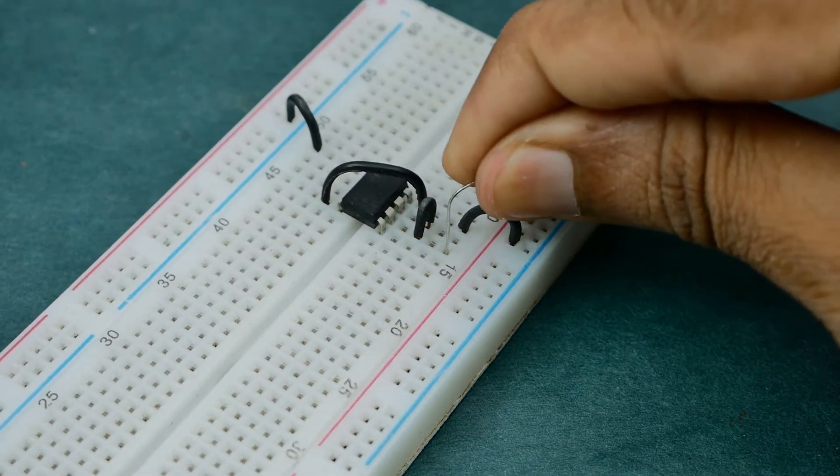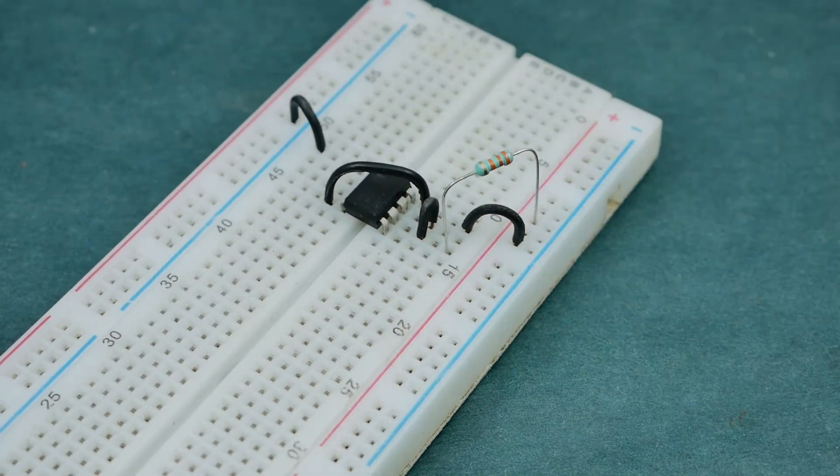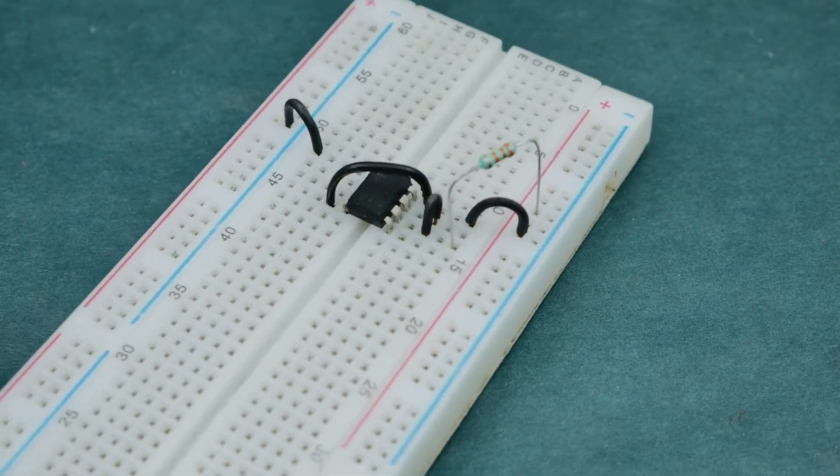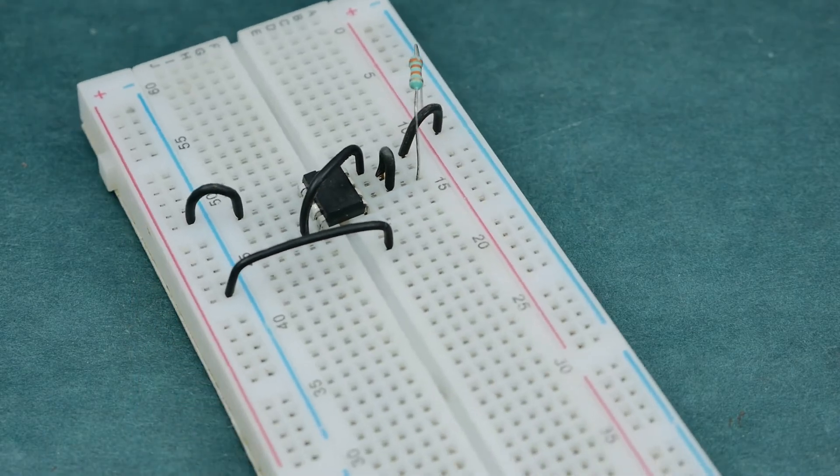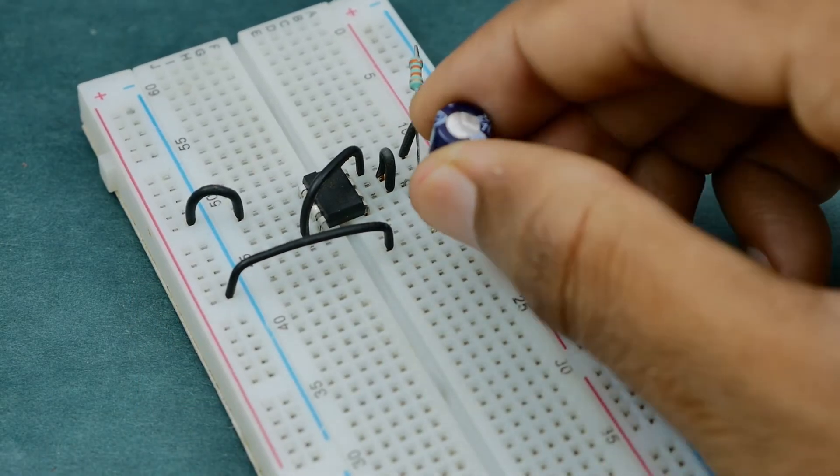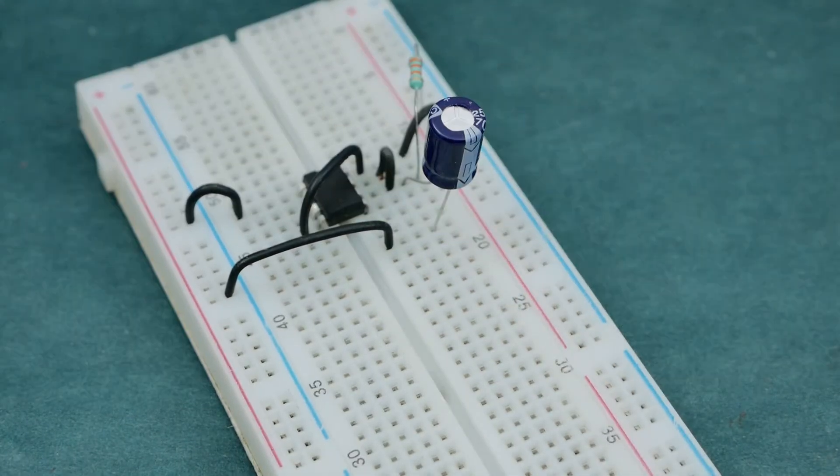Next connect a 33 kohm resistor between pin 6 and positive rail. Extend the negative rail and place a 470 microfarad capacitor with its positive terminal connected to pin 6 of the 555 timer IC and negative terminal connected to the extended negative rail.